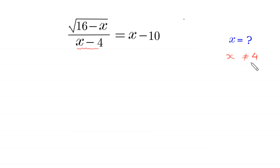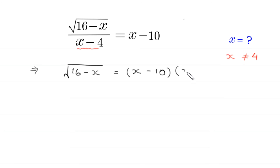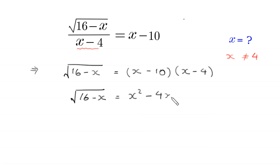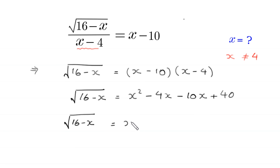If we multiply both sides by (x minus 4), this implies that the square root of (16 minus x) is equal to (x minus 10) times (x minus 4). Expanding: x times x is x squared, x times negative 4 is negative 4x, negative 10 times x is negative 10x, and negative 10 times negative 4 is plus 40. So the square root of (16 minus x) is equal to x squared minus 14x plus 40.